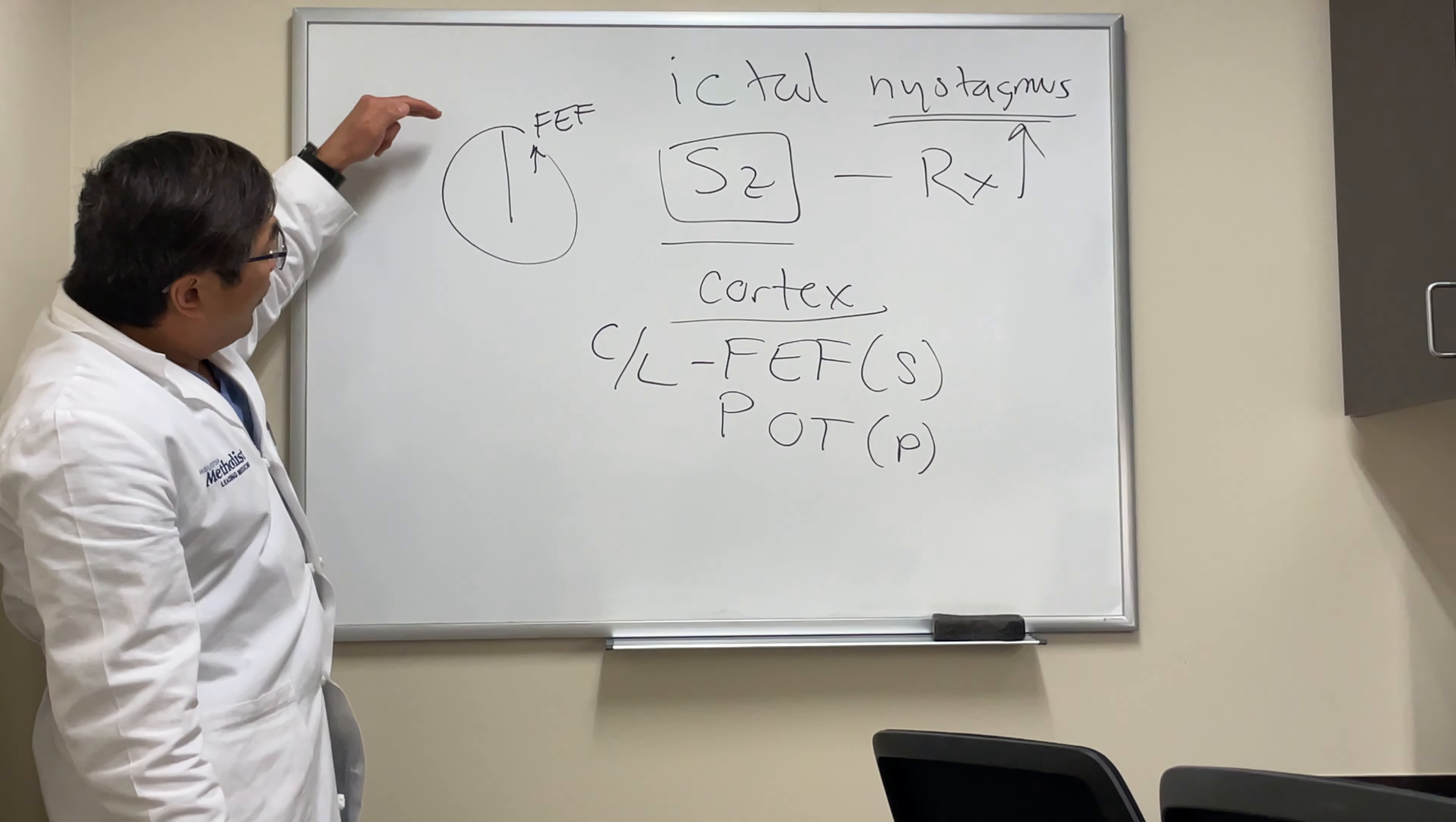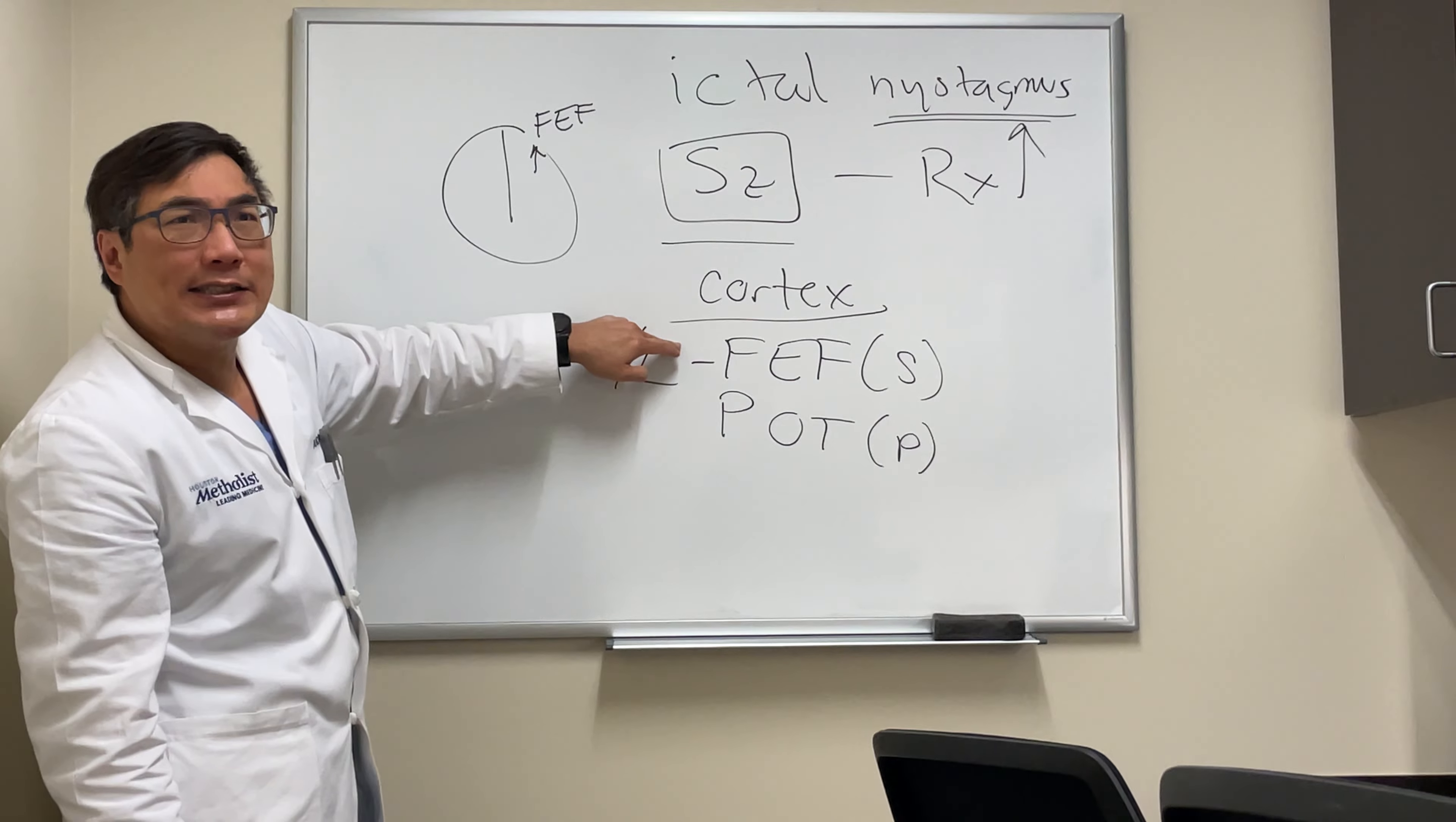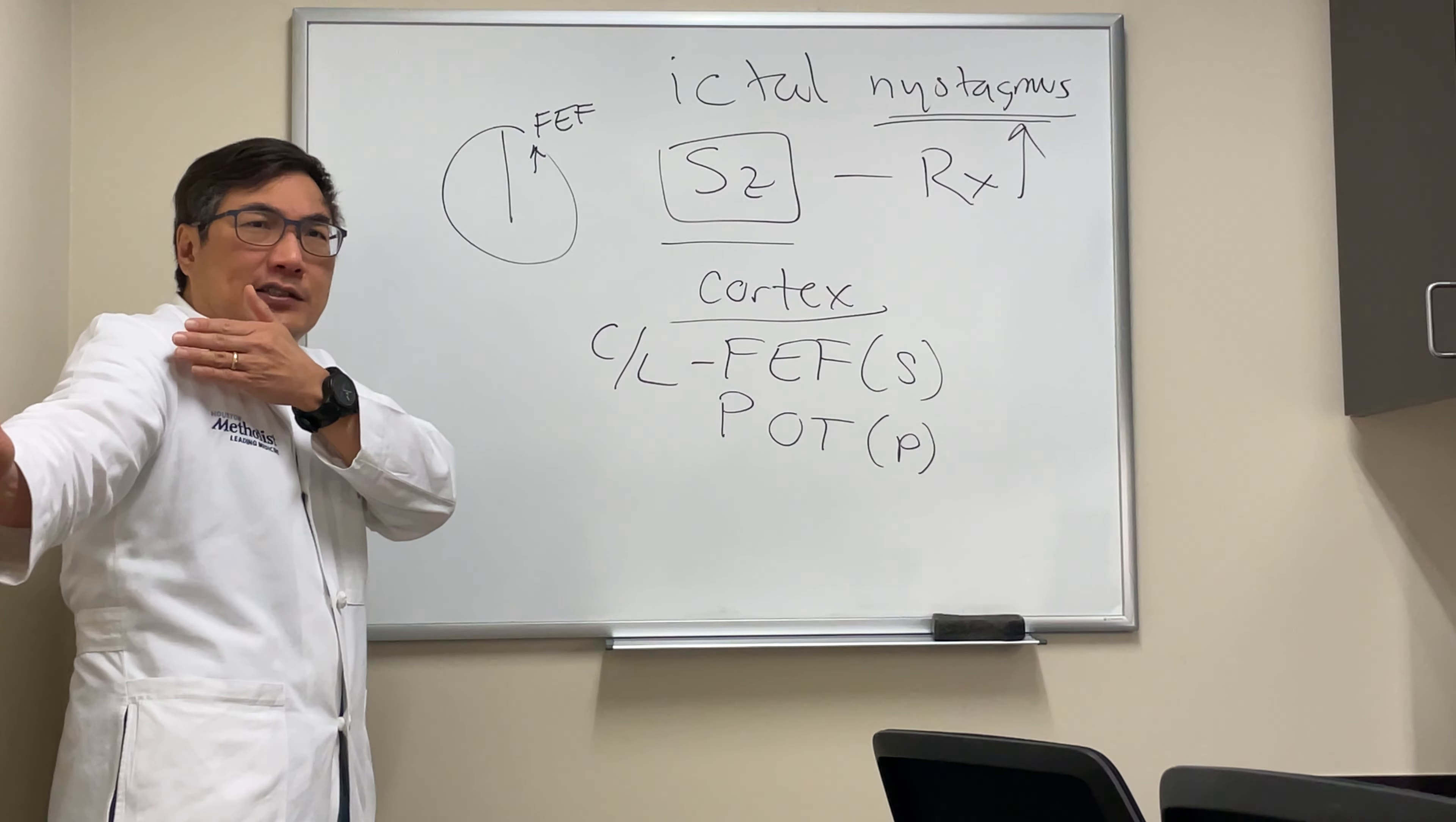And so when we see seizure related eye movement problems, normally it's gaze deviation. If it's irritated, it'll push the eyes to the contralateral side because of the frontal eye field.